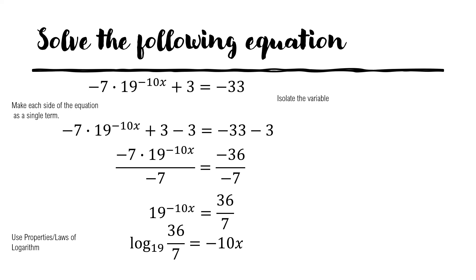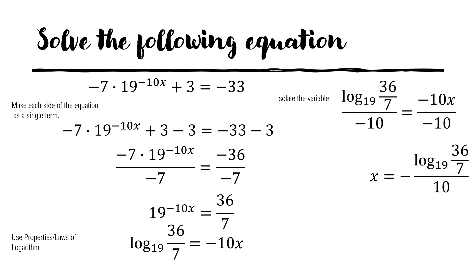We isolate x by dividing both sides by negative 10. So x equals negative logarithm base 19 of (36/7) over 10, which is approximately equal to negative 0.06. That's it for today.